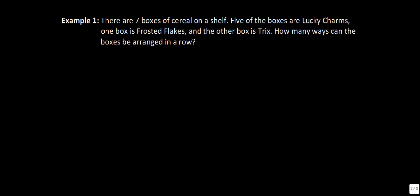It says there are 7 boxes of cereal on a shelf. 5 of the boxes are Lucky Charms, and 1 box is Frosted Flakes and the other box is Trix. How many ways can the boxes be arranged? Well, do we have any that are repeating? Of course, we have these ones right here, the boxes of Lucky Charms. So I'm going to take the 7 boxes, so that is 7 factorial. That's assuming that they're all different. And then we divide it by the number of repeating boxes that we have.